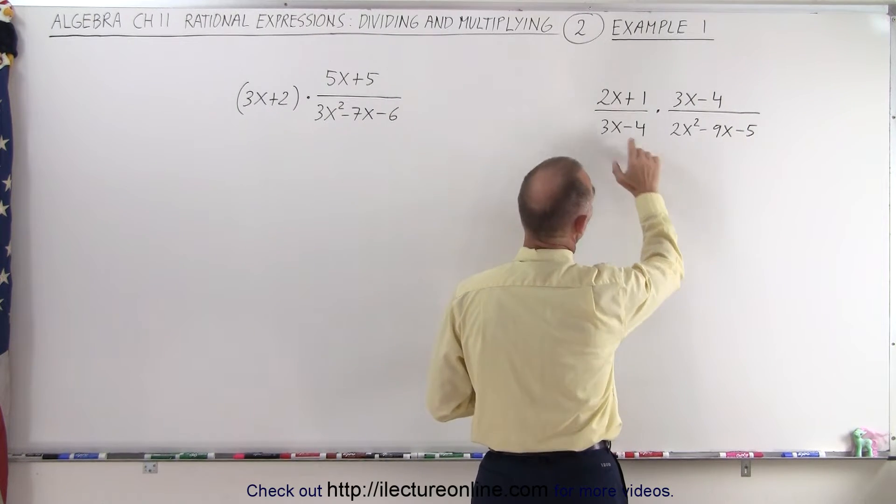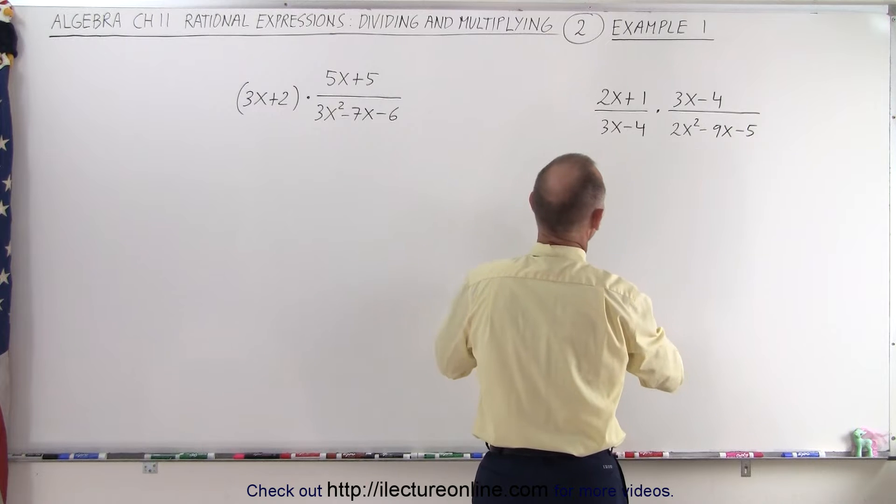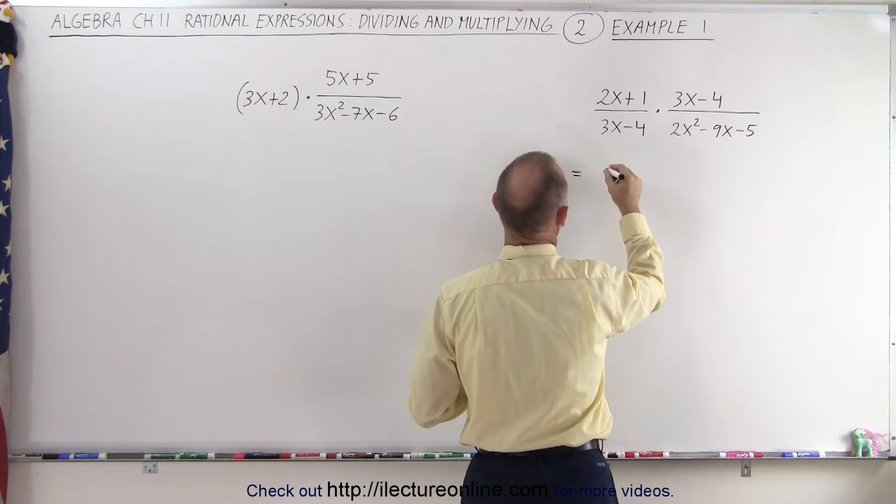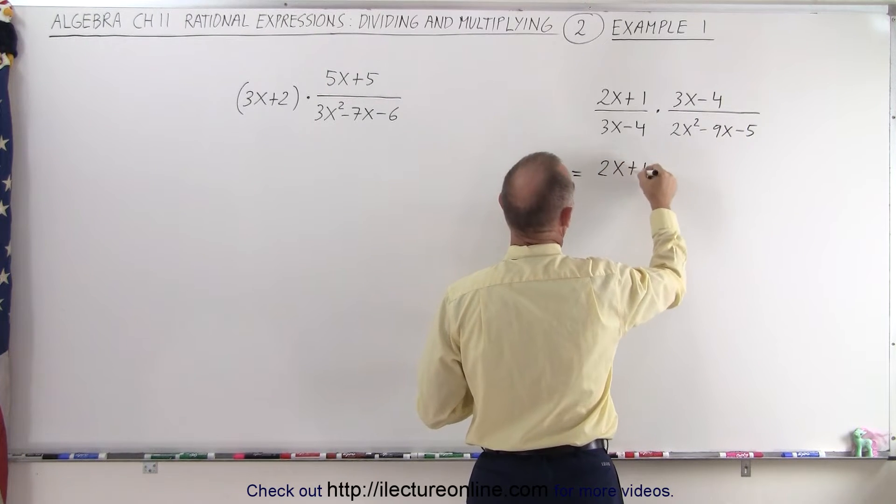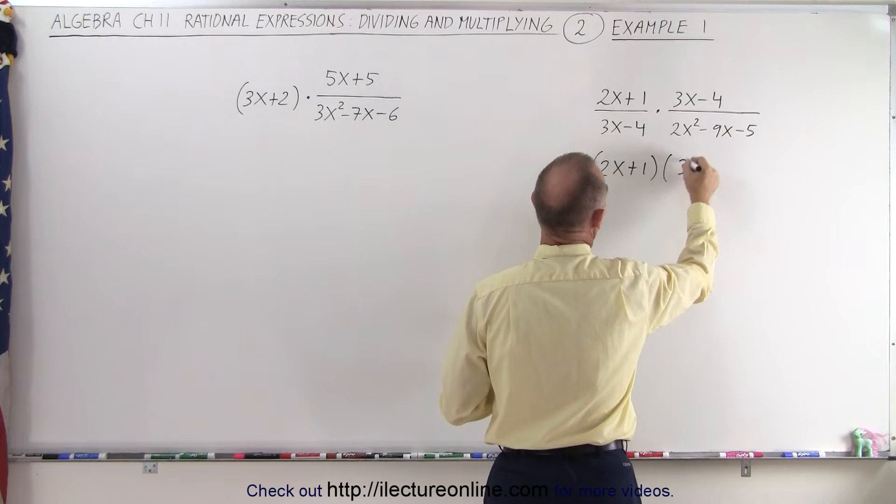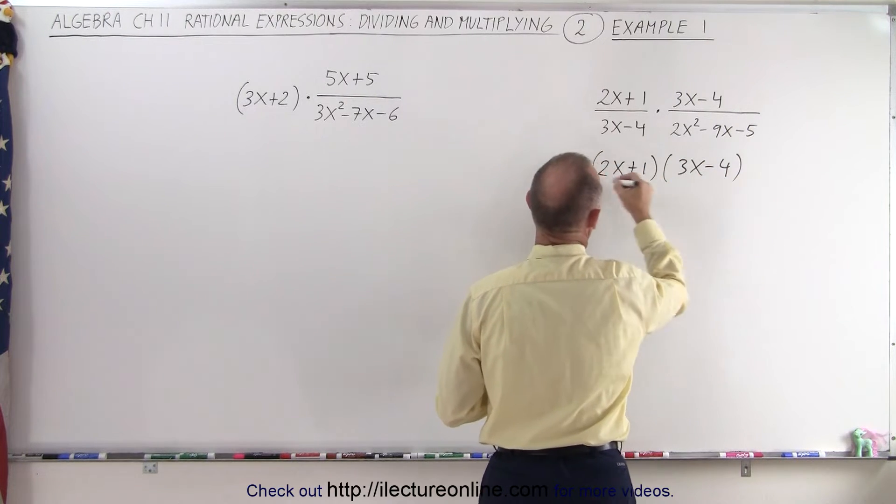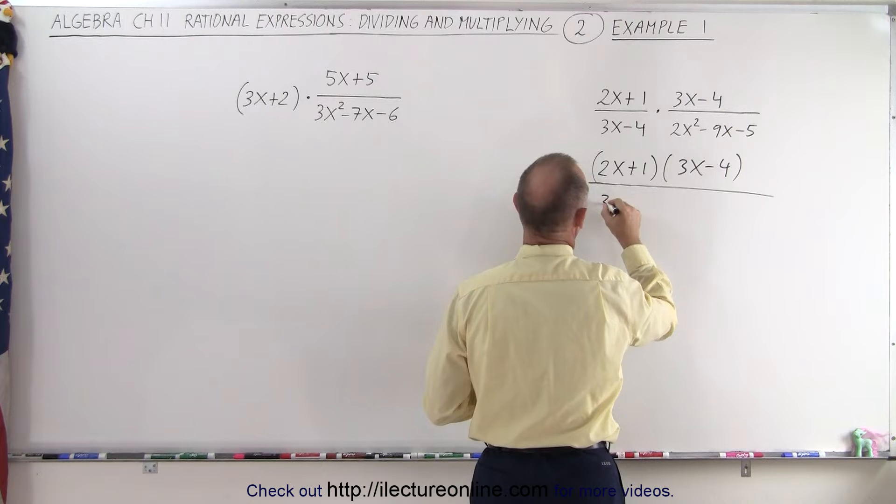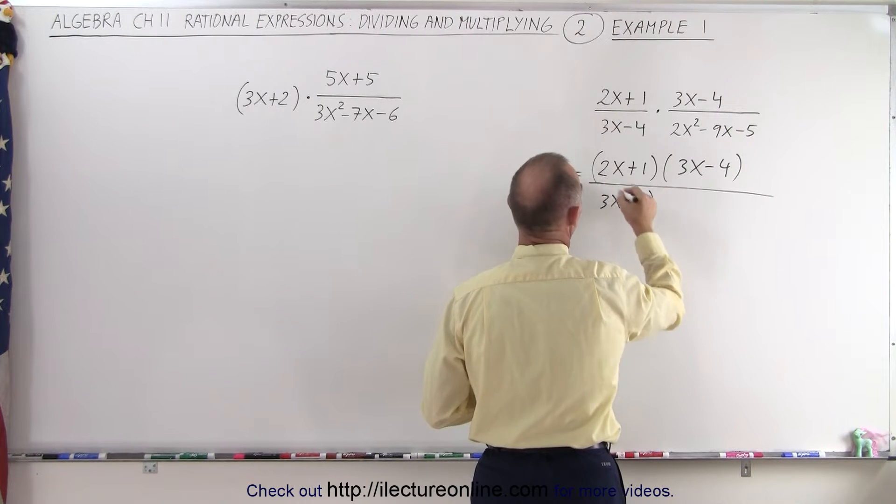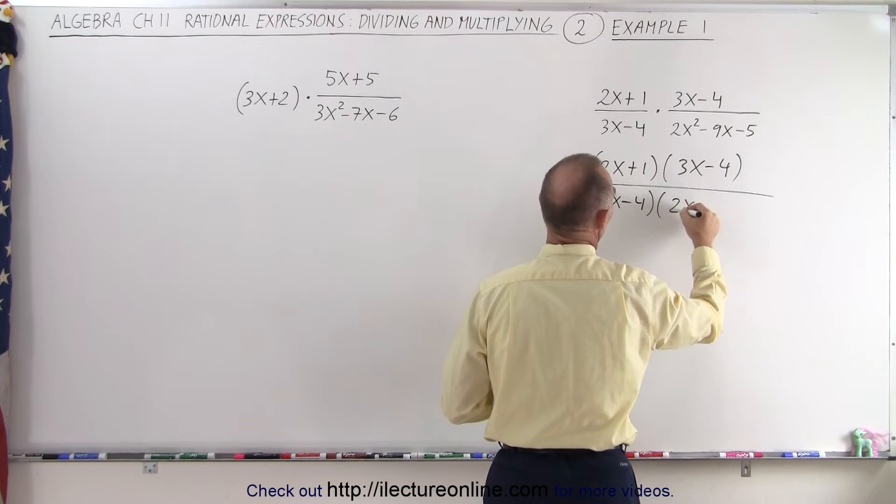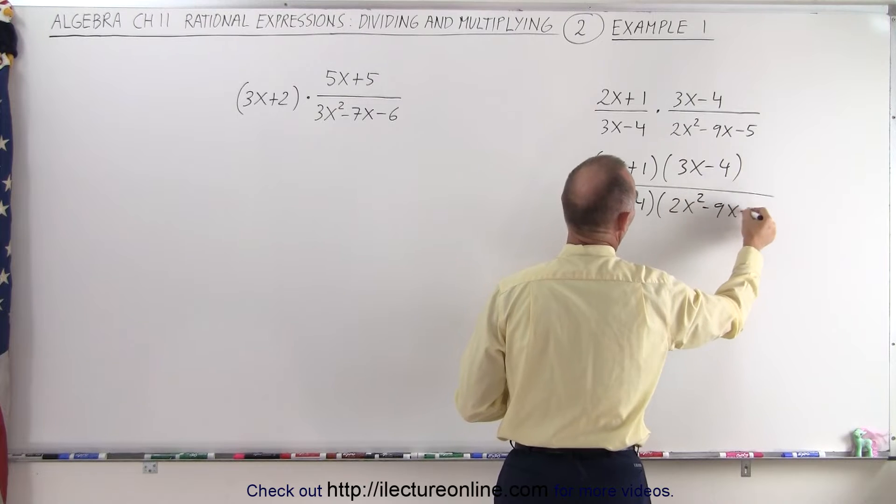And again, the first thing we can do is write that as a single fraction. So this can be written as 2x plus 1 multiplied times 3x minus 4, and the whole thing divided by 3x minus 4 multiplied times 2x squared minus 9x minus 5.